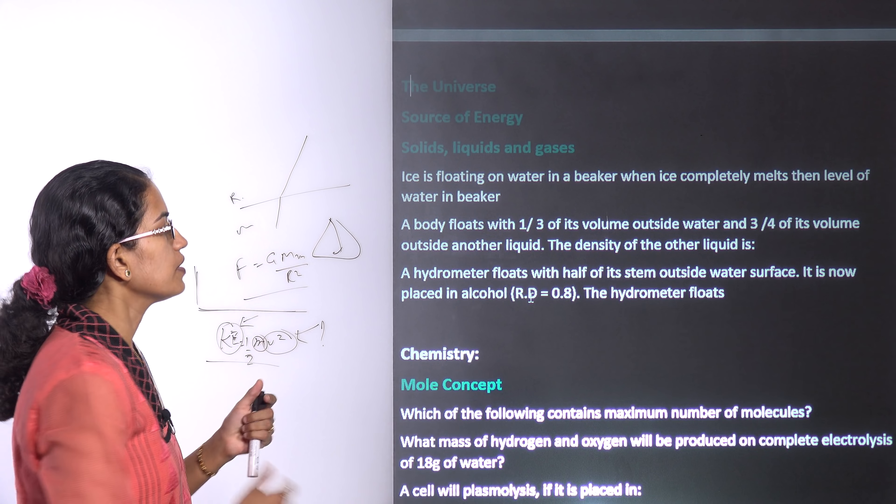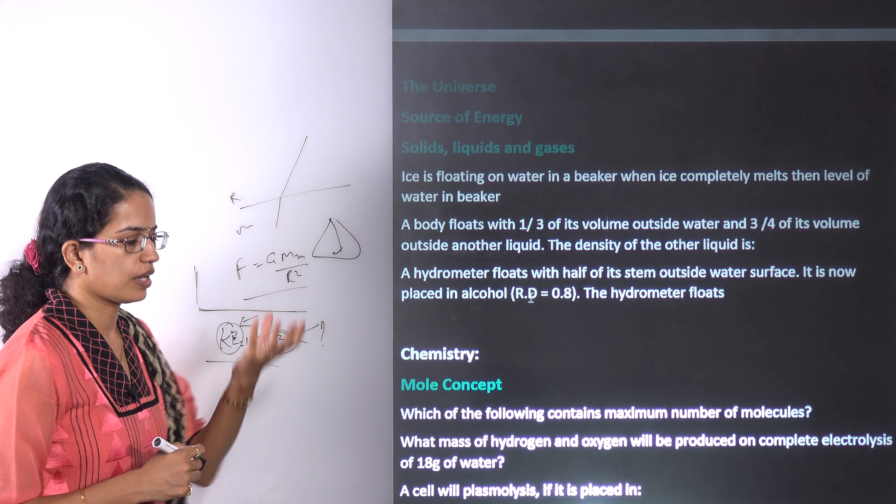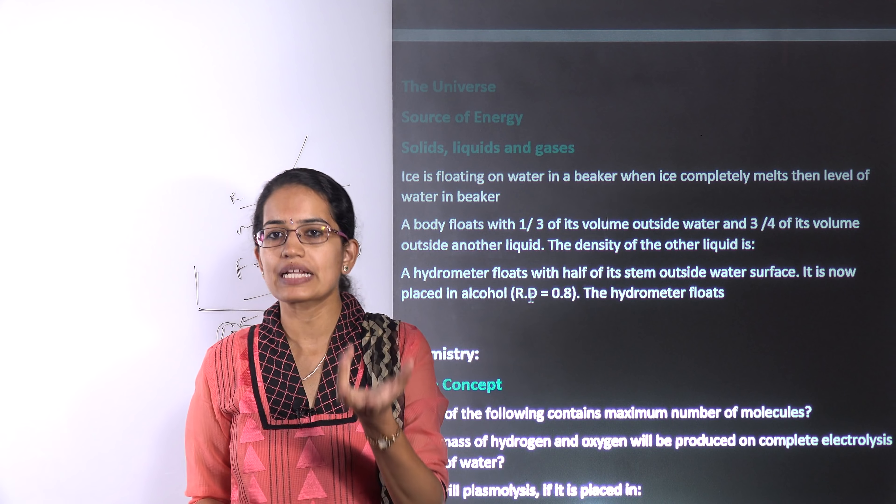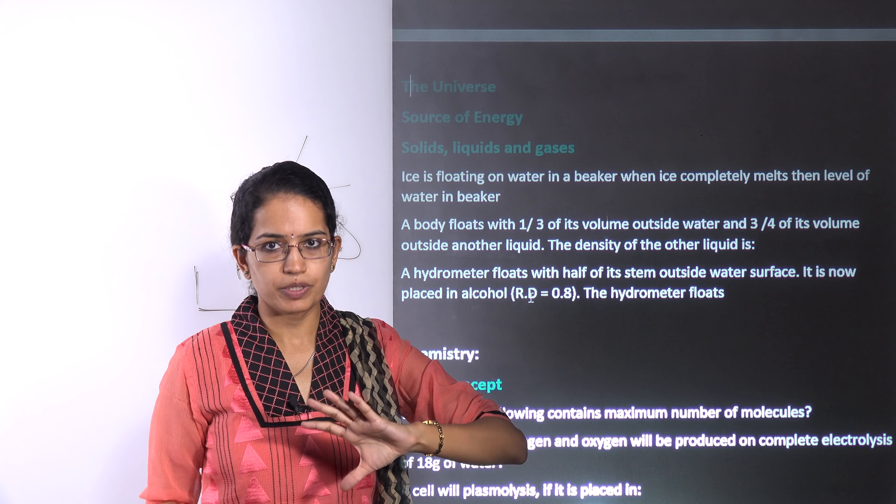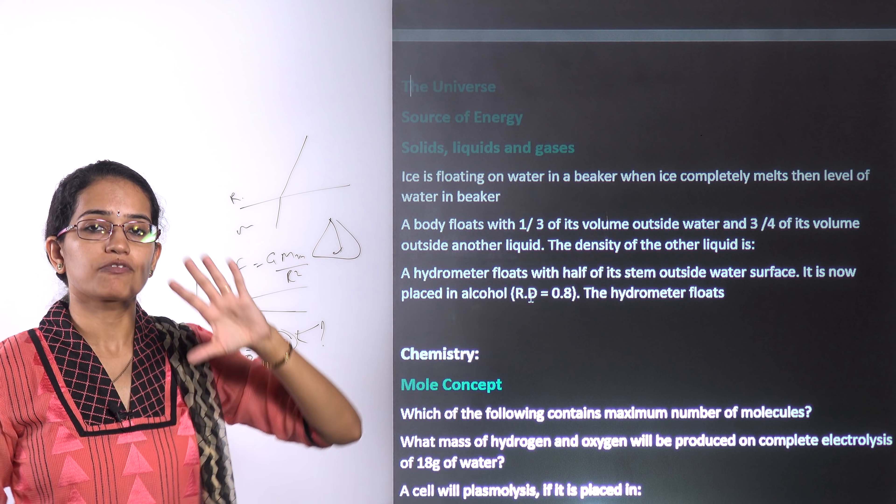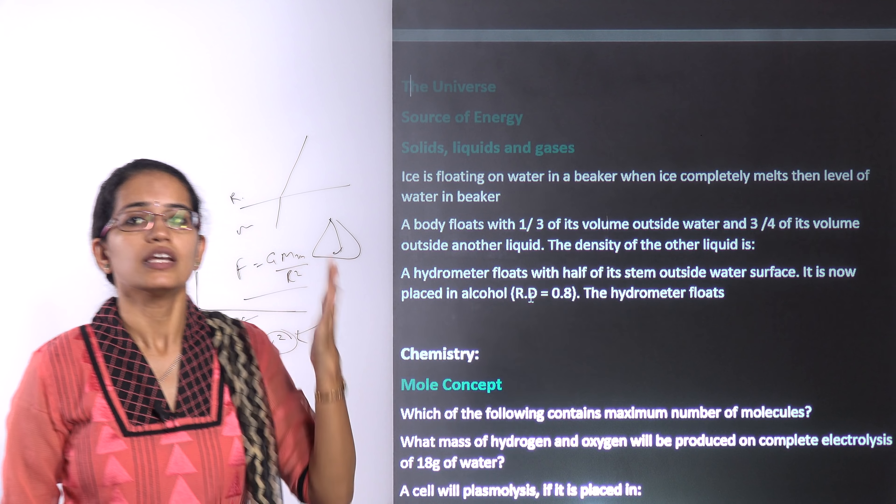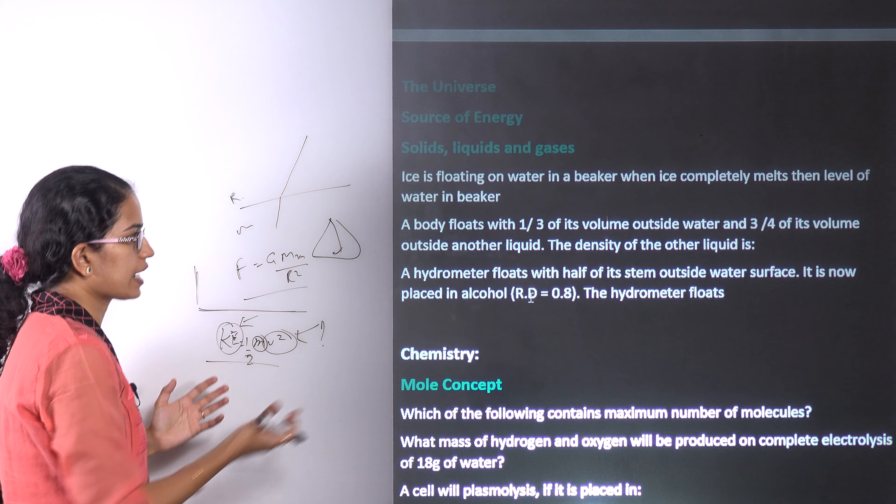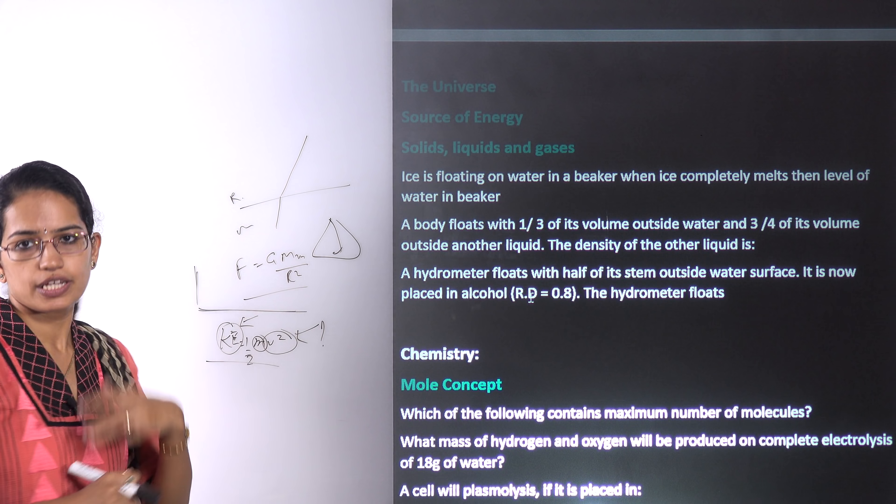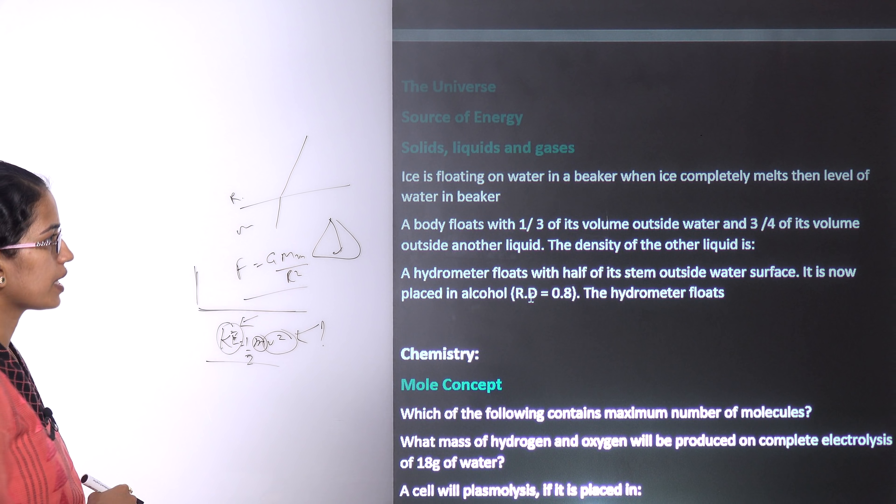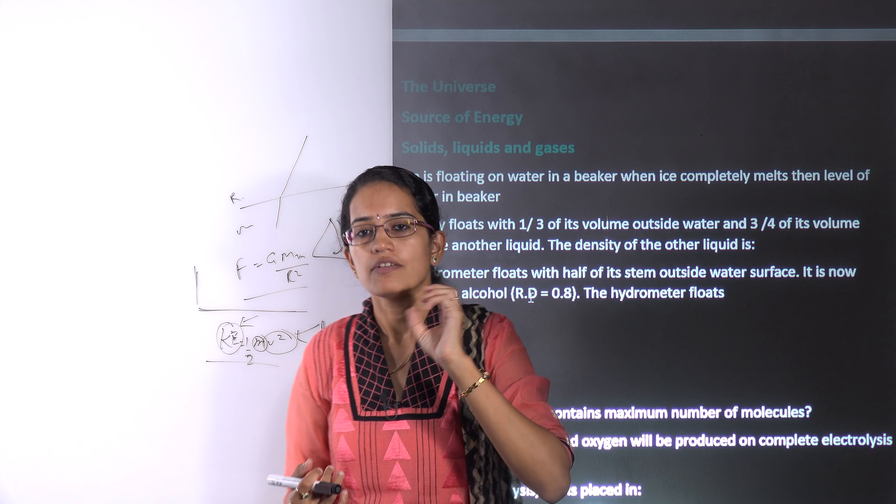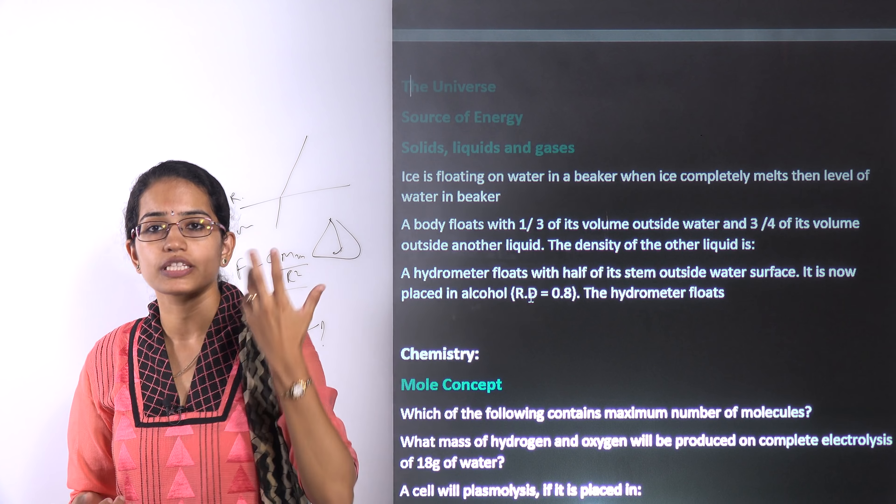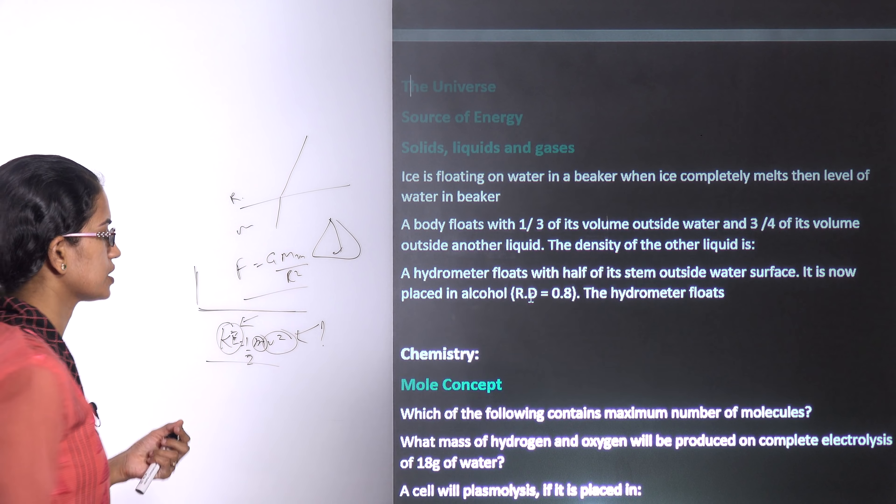When it comes to solid liquid gases, you could have questions where a body is floating on water. For example, a glacier is floating on water, one-eighth is above water, seven-eighth is below water. Similarly, with a hygrometer, whether it would float or not could be a question. Finding the density of the liquid could be another question. If you have ice that starts to melt, whether the volume of water would increase or decrease could be the kind of questions asked.